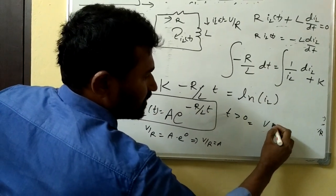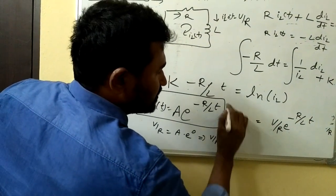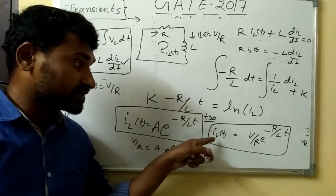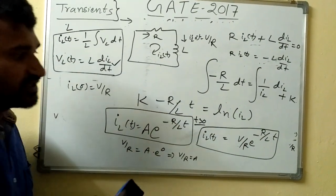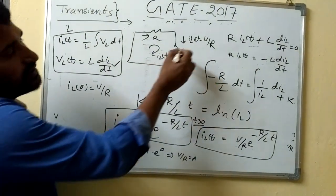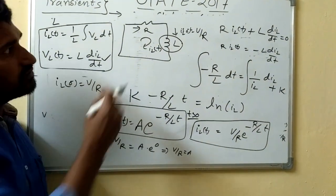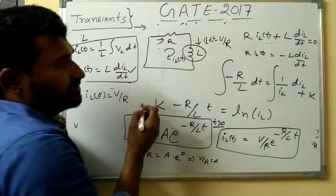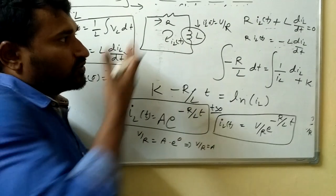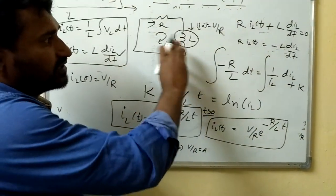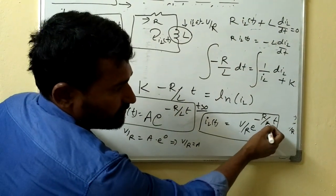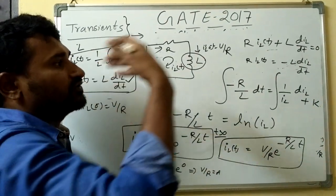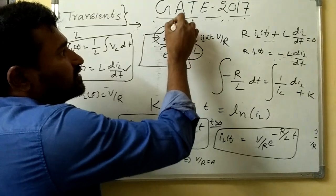So for t > 0, I_L(t) = (V/R)·e^(−R/L·t). In a source-free network the inductor current is always an exponentially decreasing function because of the e^(−x) term. The reason it is decreasing is that the inductor initially stored some energy, and now the resistor draws that energy from the inductor. The inductor behaves like a source for the resistor — it provides its stored energy to the resistor, losing energy over time. At t = ∞, I_L = 0, meaning energy is zero, and all the energy has been dissipated as heat in the resistor.